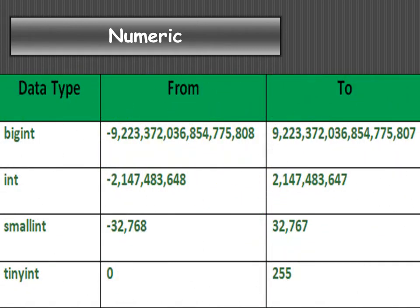BIGINT is used to store a very large integer value. INT (integer) is used to store a large integer value but smaller than what can be stored by BIGINT. SMALLINT stores an integer number smaller than the INTEGER data type. TINYINT stores a very small integer number, ranging from 0 to 255.